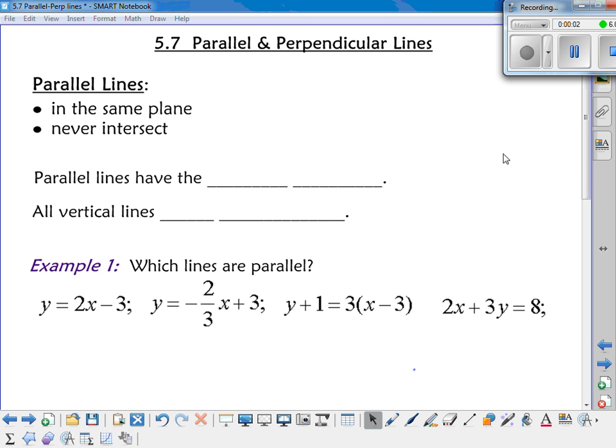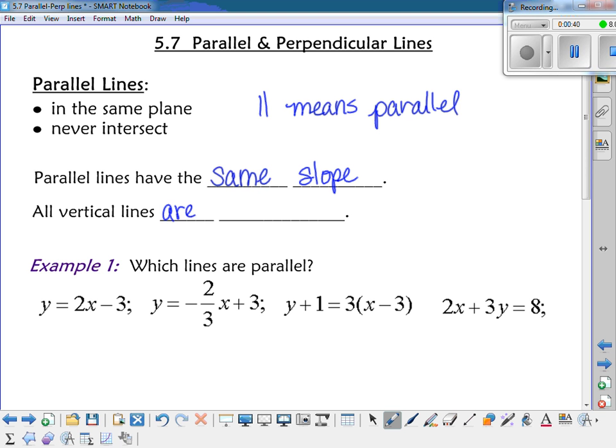Okay, so section 5.7 of your book talks about parallel and perpendicular lines. Today we're going to just deal with parallel lines, and we'll do perpendicular lines next week. So parallel lines are in the same plane, and they never intersect. And I will abbreviate it with that symbol, which means parallel. So the thing that you need to know about parallel lines is they all have the same slope. And all vertical lines are parallel to each other.